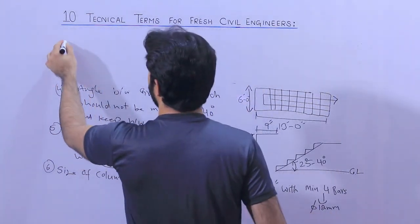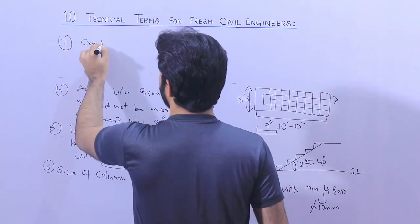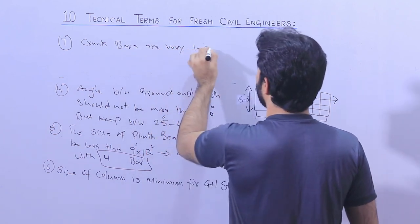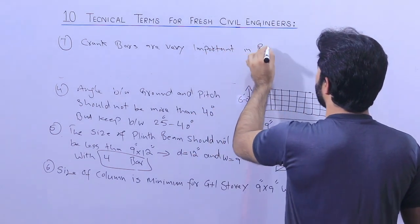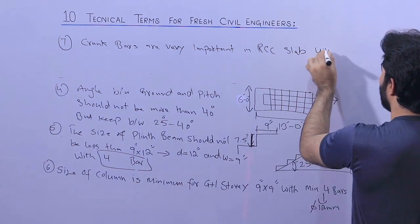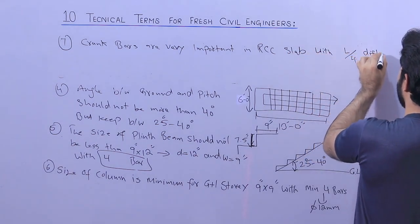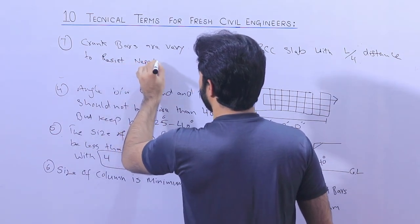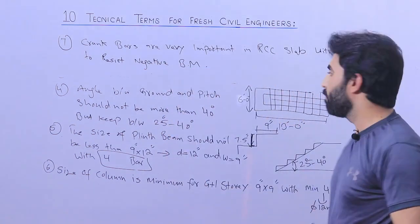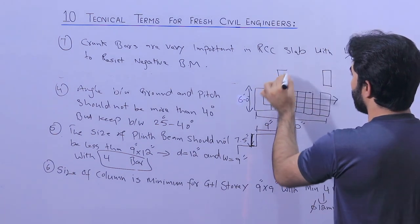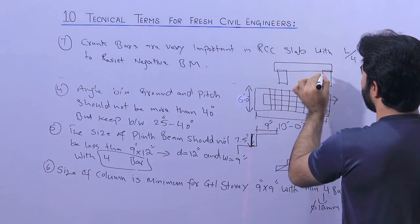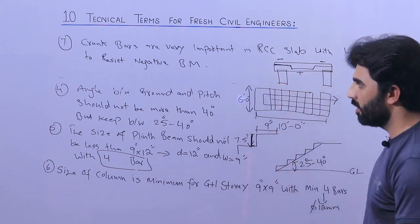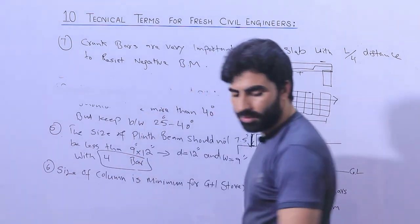The seventh term is crank bars. Crank bars are very important in an RCC slab. They are provided at an L by 4 distance to resist the negative bending moment. As you can see, between two columns with a slab on top, the crank bar is placed here. At the supports we have negative bending moment, and at mid-span we have positive bending moment. This is very economical, so you should provide crank bars.